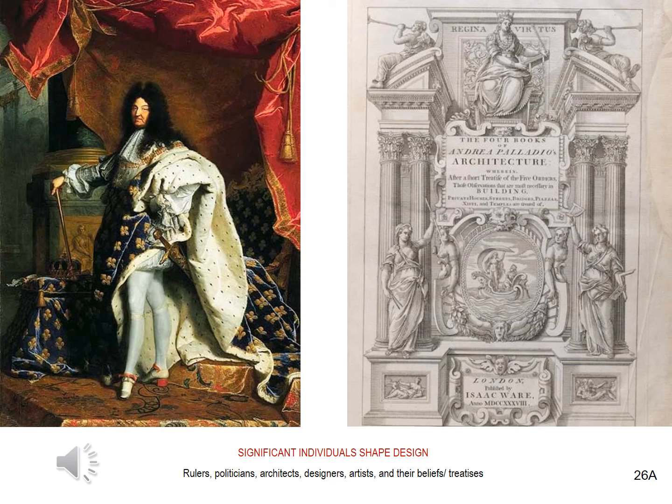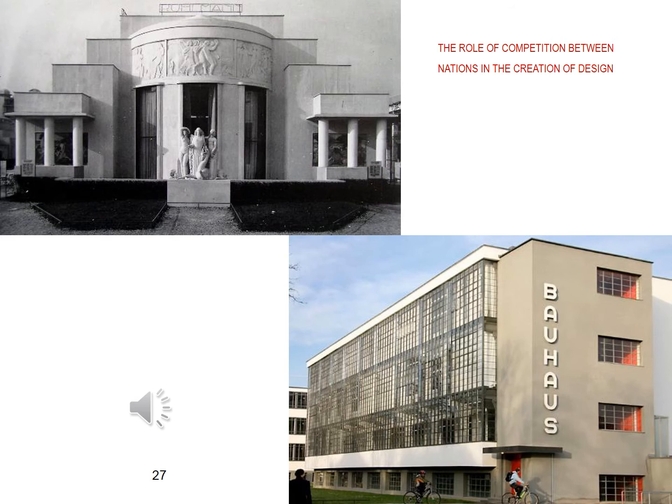The history of design is chock-a-block with important people from all walks of life who shaped design. Here, two significant historical examples. On the left, Louis XIV of France, who single-handedly created a style that reflected his own personality and values, but which swept the globe and made France the world leader in design — a title they held for centuries. On the right, an example of how the ideas of one person can shape design through the power of printed words and images, which are so easily spread far and wide throughout the world and across time. Palladio's treatise is still consulted today on a daily basis by architects and designers around the world.